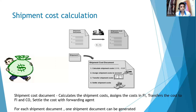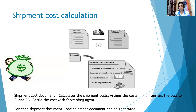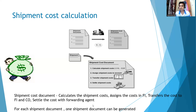Calculate the shipment cost, assign the cost to FI, then transfer the cost to CO — Controlling. Settle the cost with the forwarding agent. Controlling is required because vendors and drivers keep changing for the same transaction. You need either an internal or external cost center depending on the scenario. For each shipment, one shipment cost document should be generated.